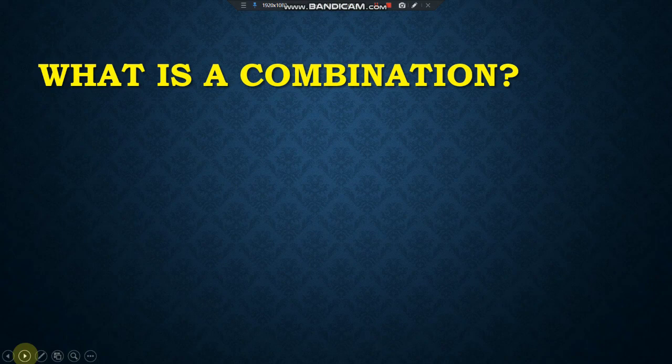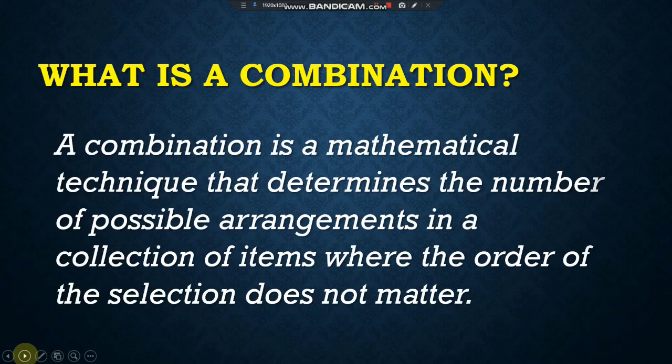What is a combination? A combination is a mathematical technique that determines the number of possible arrangements in a collection of items where the order of the selection does not matter.